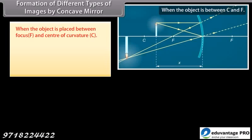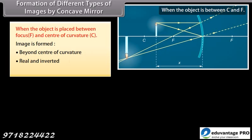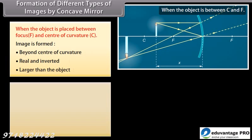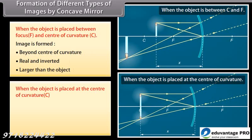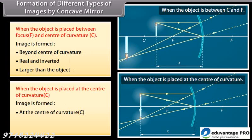When the object is placed between focus F and the center of curvature C, the image is formed beyond the center of curvature — real and inverted, and larger than the object. When the object is placed at the center of curvature C, the image is formed at C — real and inverted, and the same size as the object.